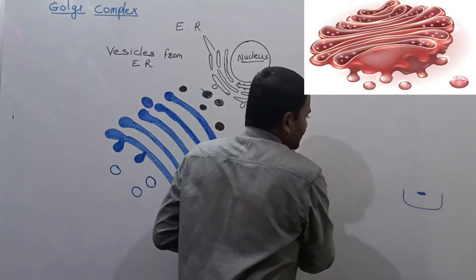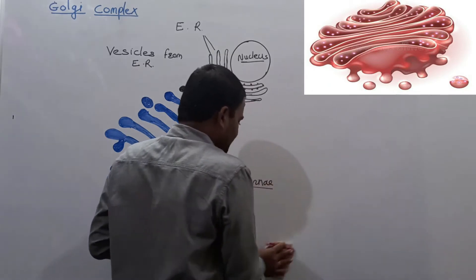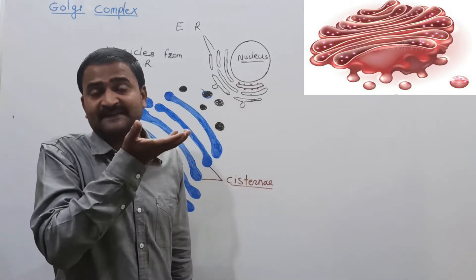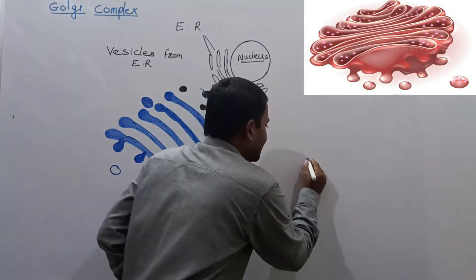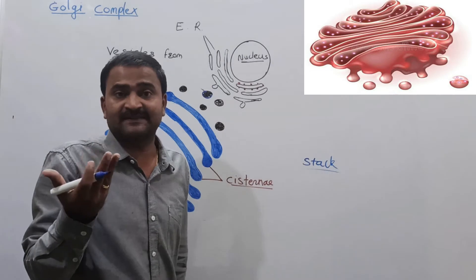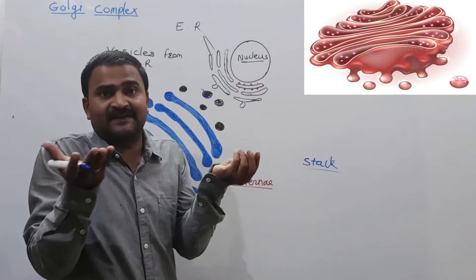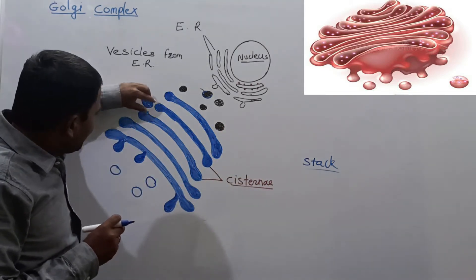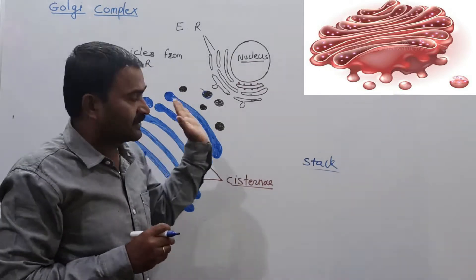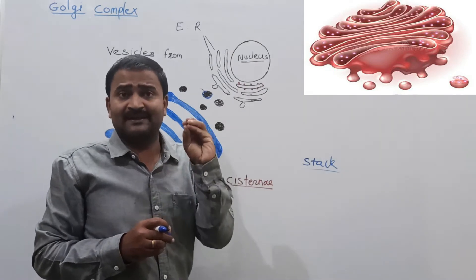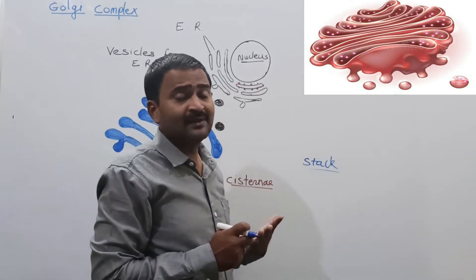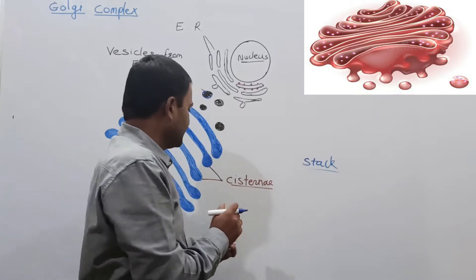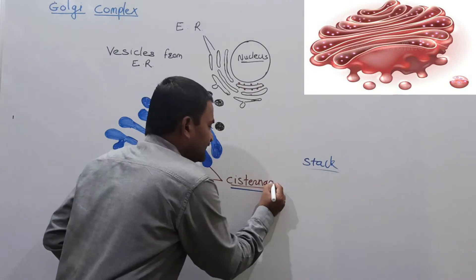When observed under an electron microscope, it is seen that the Golgi apparatus mainly contains a stack of membranous sacks — membrane-bounded sacks or bags. These are the sacks arranged one over another in a stack, and this stack is what we call the Golgi apparatus. These membranous sacks are called cisterni.